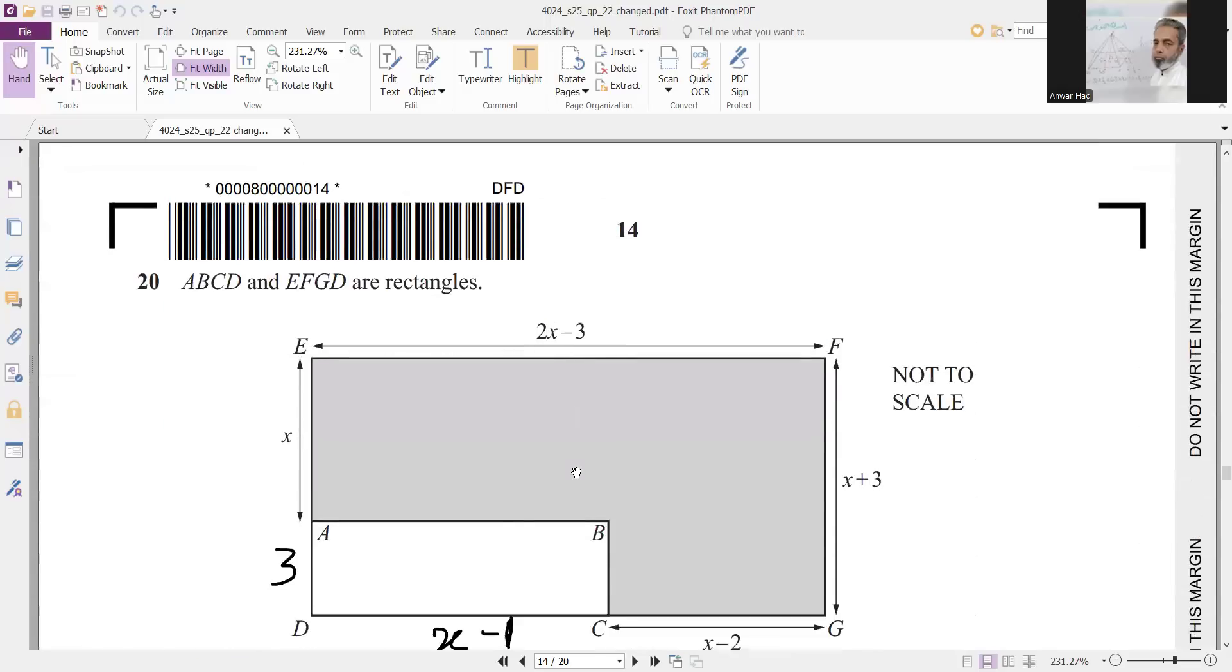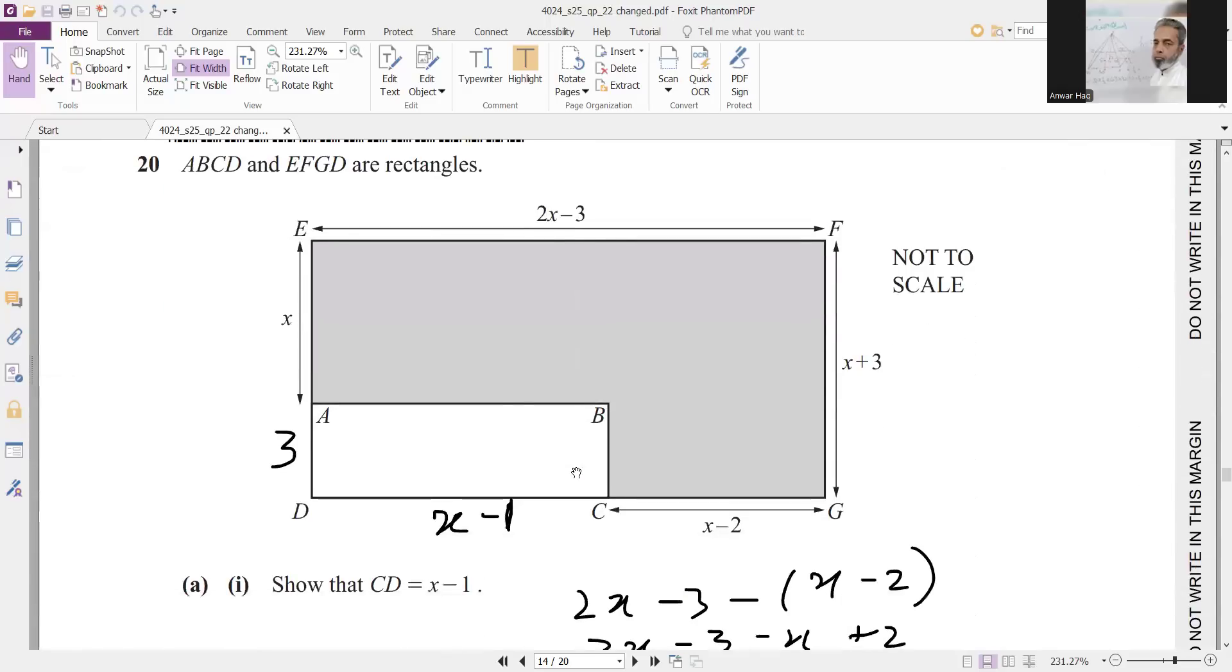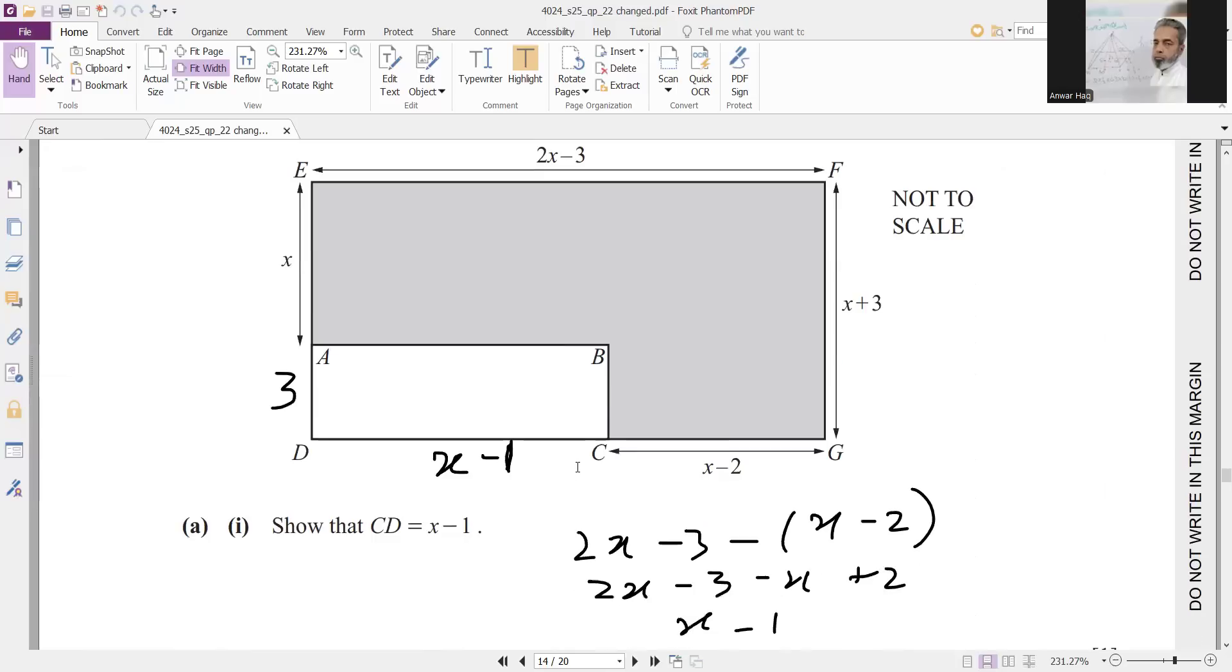Next is ABCD and EFGD are rectangles. Show that CD is equal to x minus 1. So simply 2x minus 3 subtract x minus 2, so you will get CD.